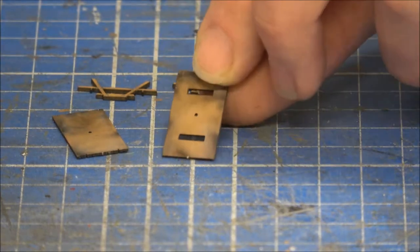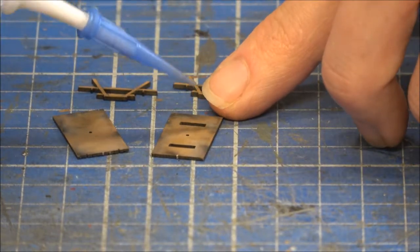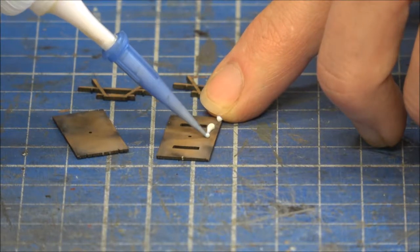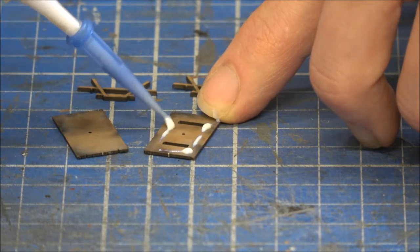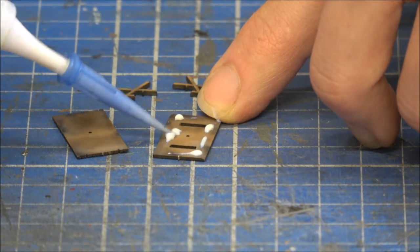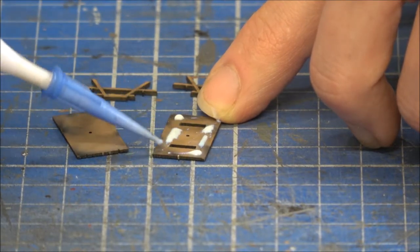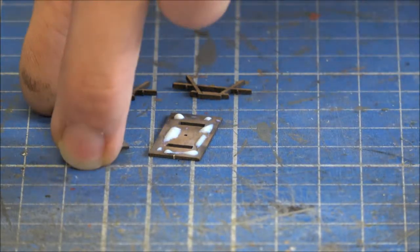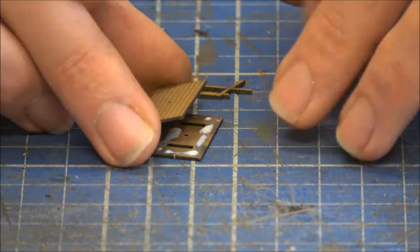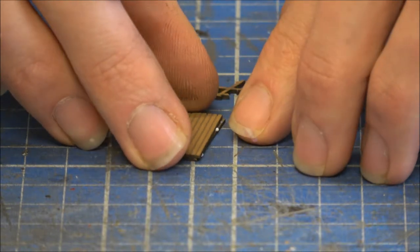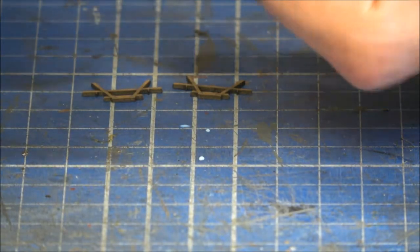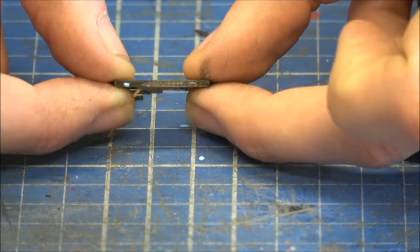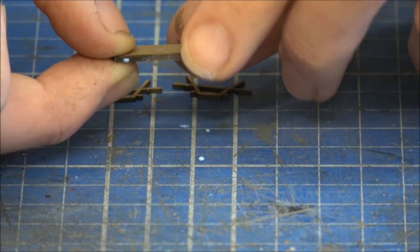So I'm going to put a little bit of the Rocket Card glue on the back of the underside piece. And then stick the top piece on top a bit. Hopefully you'll see there, that's those two pieces together.